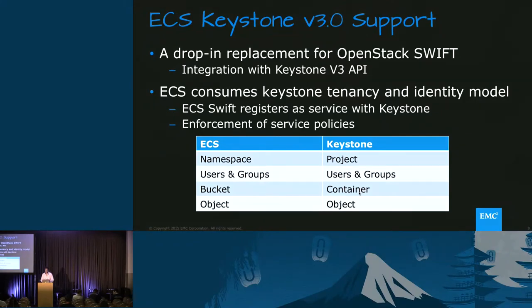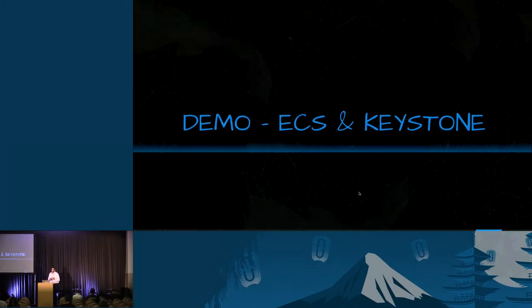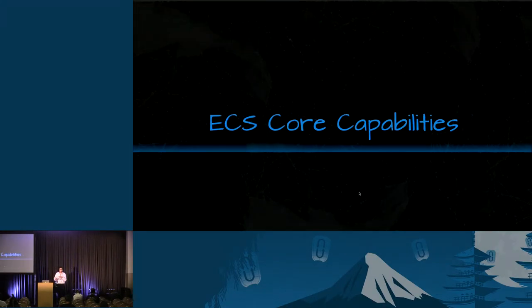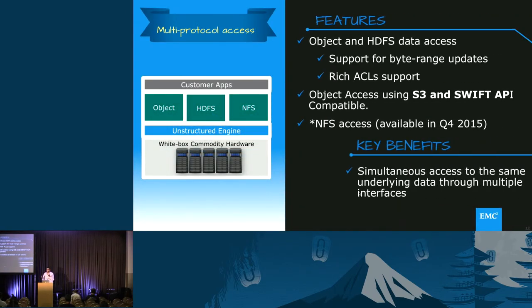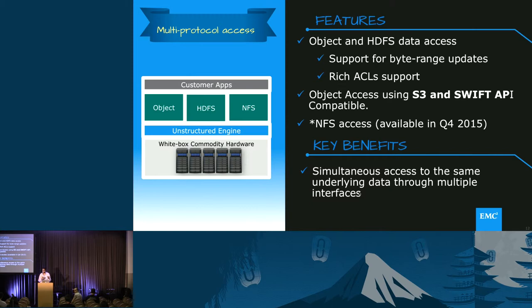Switching back to the slides, I want to talk about the core capabilities of ECS. Now that you have your object store, what differentiates it from any other object store? The first thing is true multi-protocol access — it supports S3 and Swift API. It actually allows you to simultaneously access data from HDFS, NFS, and object. You could actually write object data and access it as NFS, or vice versa through HDFS.